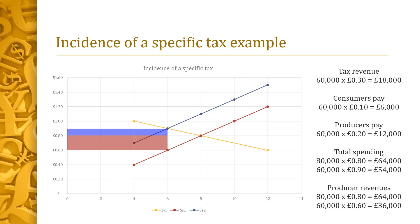From this information we can make a number of calculations. The tax revenue will be the 60,000 units now sold multiplied by the 30 pence tax, giving £18,000. Consumers will pay 10 pence per unit across 60,000 units, contributing £6,000. Producers will pay 20 pence, contributing £12,000. Total spending in this market will be reduced from £64,000 — the 80,000 units initially sold at 80 pence — to £54,000, which is the 60,000 units now sold at 90 pence. Producer revenues fall from £64,000 to £36,000, as they are only selling 60,000 units and retaining just 60 pence from each sale.